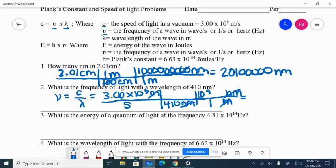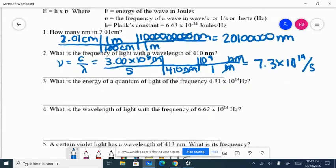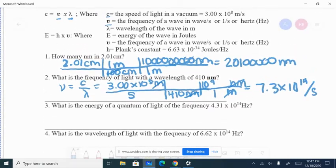So the frequency to two sig figs would be 7.3 times 10 to the 14th per second. That means a wave of light comes by at a rate of 7.3 times 10 to the 14th waves per second.